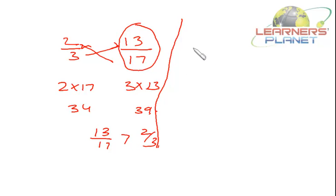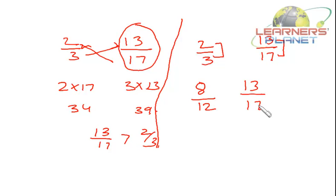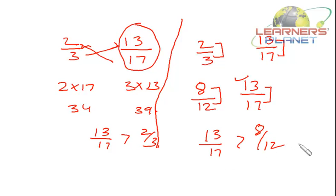Alternatively, for 2/3 and 13/17: the difference between numerator and denominator in 2/3 is 1, and in 13/17 it is 4. I can make this difference also 4 by multiplying 2/3 by 4, giving 8/12. Now 8/12 is equivalent to 2/3, and the difference in both fractions is 4. Since the fraction with the higher numerator is higher, 13/17 is greater than 8/12, meaning 13/17 is greater than 2/3. We've covered three techniques — let's apply them to more problems.